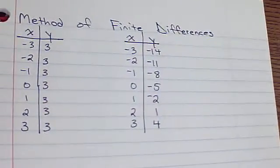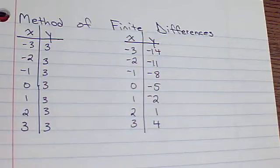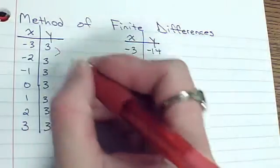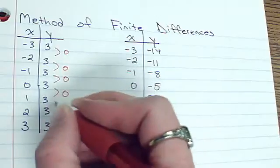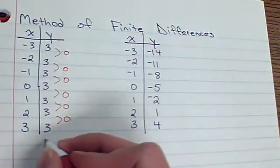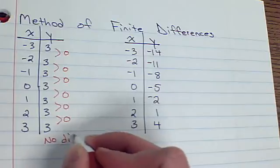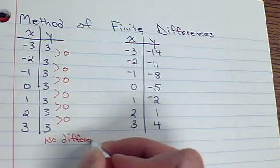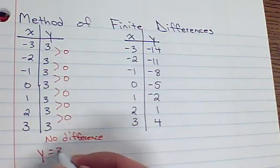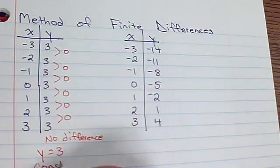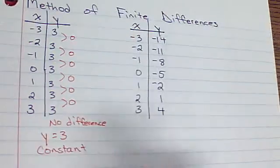I have several tables of data listed. Finite differences means I'm going to subtract my y-values, or find the difference in my y's. Looking at the first table, there is no difference in the y-values — they're all the same. No difference means our y-values are constant. It's a constant function: y is 3 no matter what x is.